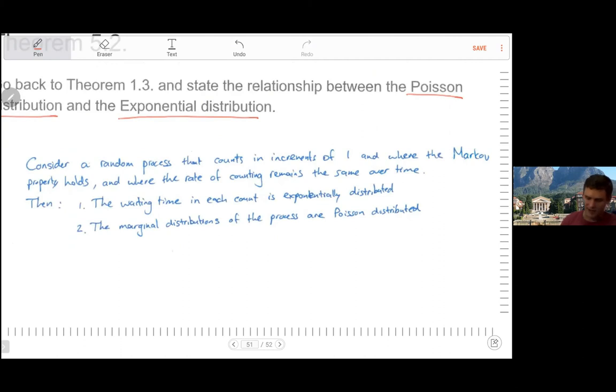Consider a random process that counts in increments of one and where the Markov property holds. Which is very, as we said, a very reasonable assumption to make. Because if you're counting up in increments of one, all that matters is where you're counting from. And where the rate of counting remains the same over time, then the waiting time in each count is exponentially distributed.